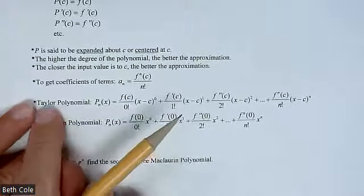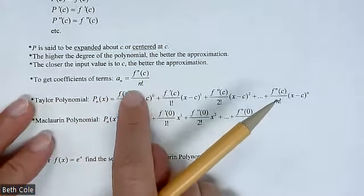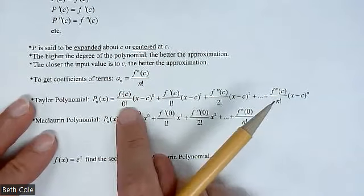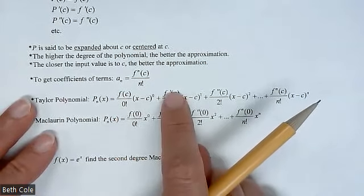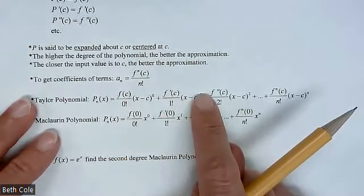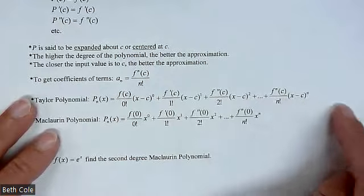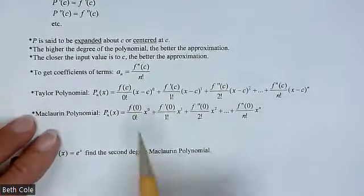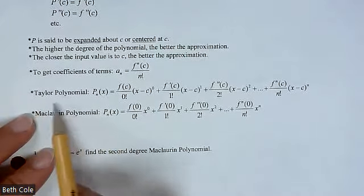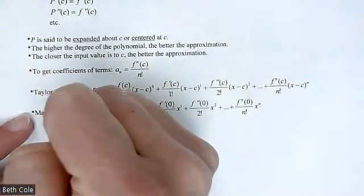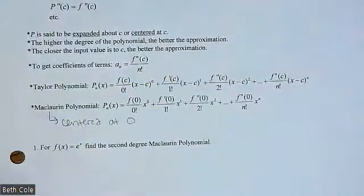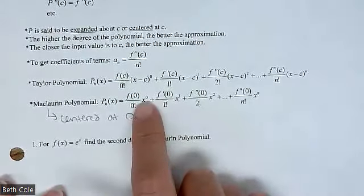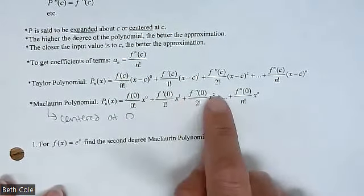Here's how you write out what's called a Taylor polynomial — named after Taylor. It's your function: the zeroth derivative over 0 factorial times x minus C to the 0, plus the first derivative over 1 factorial times x minus C to the 1, then all 2s, and so on. If you're centered at 0, it is called a Maclaurin polynomial. So you have x to the 0, x to the 1, x to the 2 — because it'd be x minus 0, which is just x.